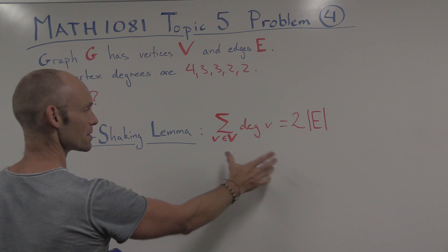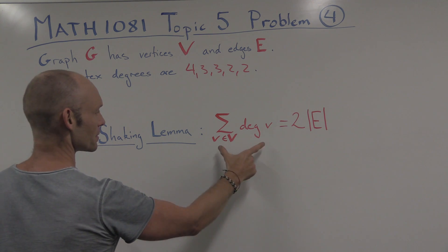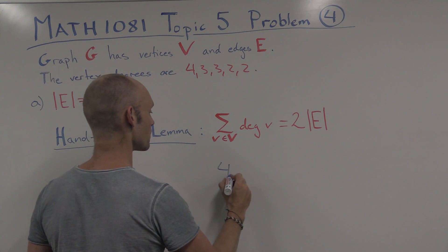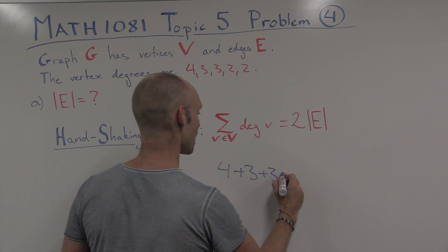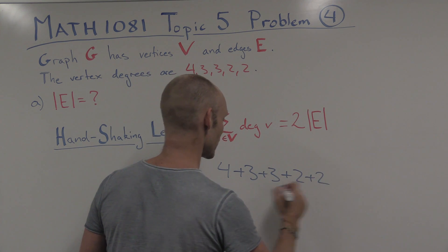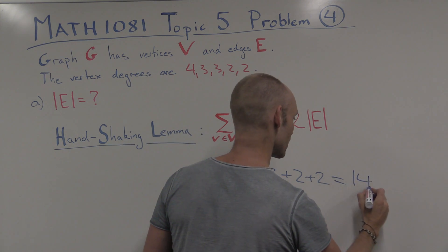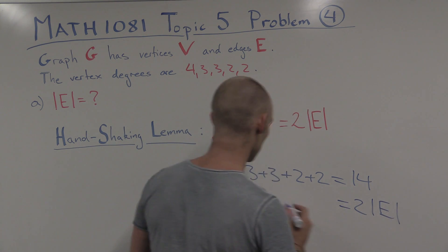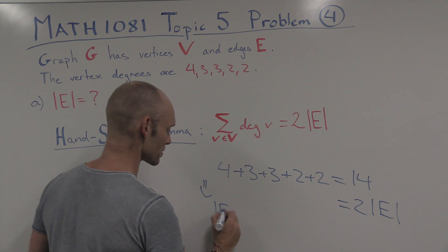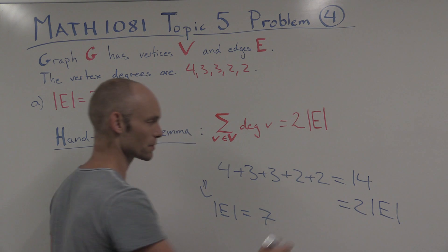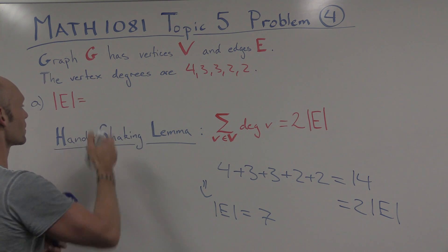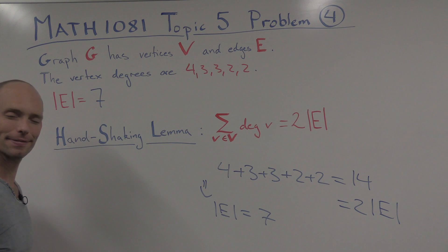So what do we need to do? Well, let's use this lemma. So we've got the number of degrees here. Add them together. So we have that 4 plus 3 plus 3 plus 2 plus 2, that's 14. And that's apparently equal to 2 times the number of edges. So we see that the number of edges is just equal to 7, or 14 divided by 2. So we can now answer that question. The number of edges in the graph was 7.